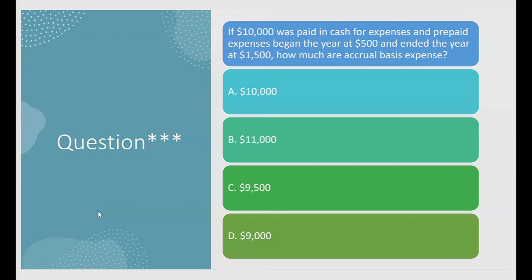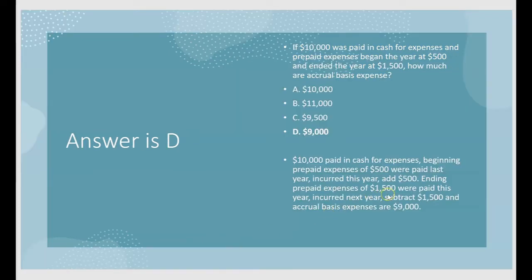If $10,000 was paid in cash for expenses and prepaid expenses began the year at $500 and ended the year at $1,500, how much are accrual basis expenses? You paid $10,000 in cash. The beginning prepaid expense of $500 was paid last year and will be incurred this year — add $500, up to $10,500. The ending balance of $1,500 was paid this year but won't be incurred until next year — subtract $1,500. Accrual basis expenses are $9,000, letter D.